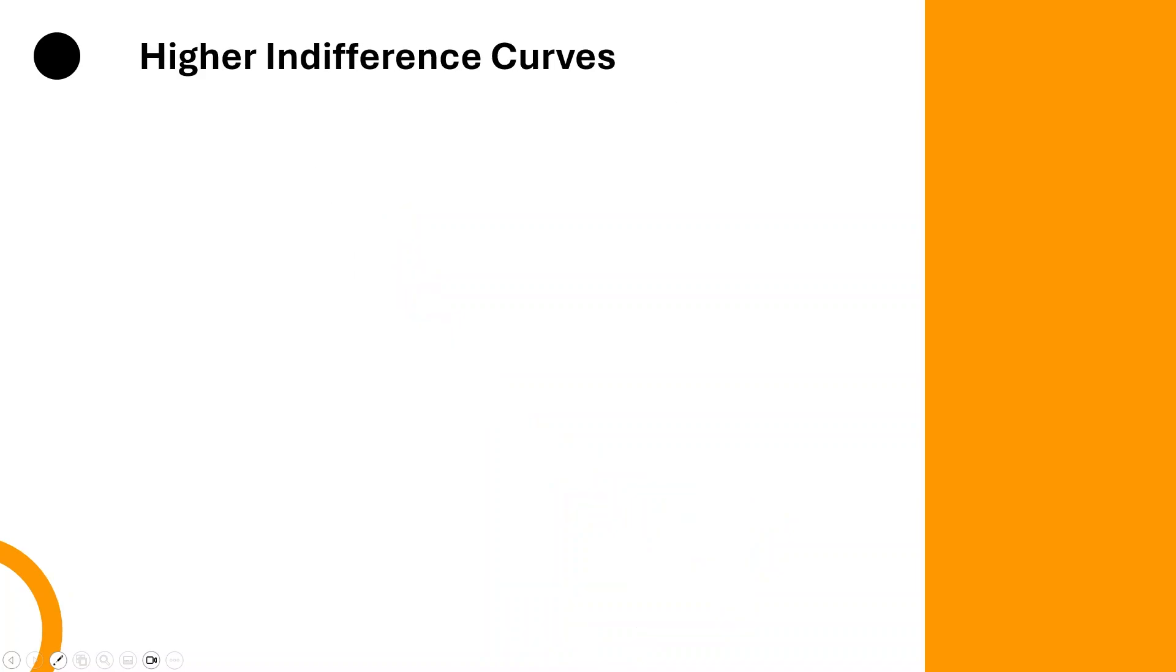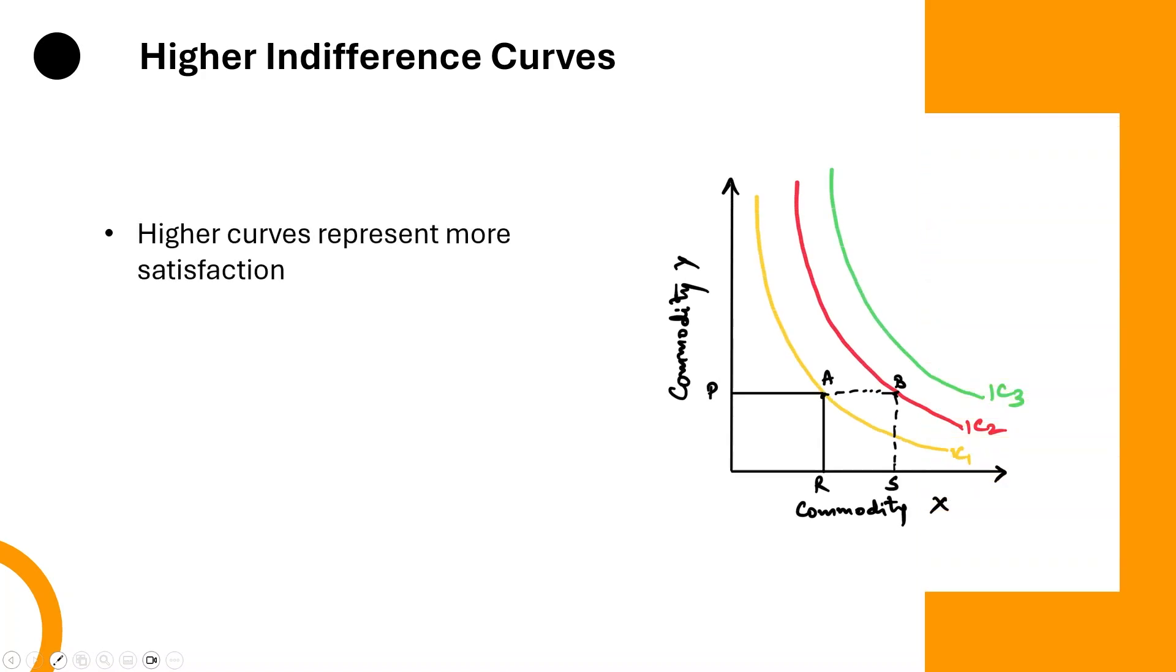Also, if you could move to a higher indifference curve, it will make you even happier. Each curve represents a higher or lower level of satisfaction, depending on how far it is from the origin. Curves further away from the origin indicate higher satisfaction levels.